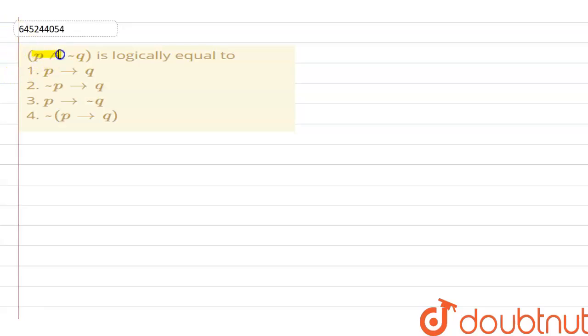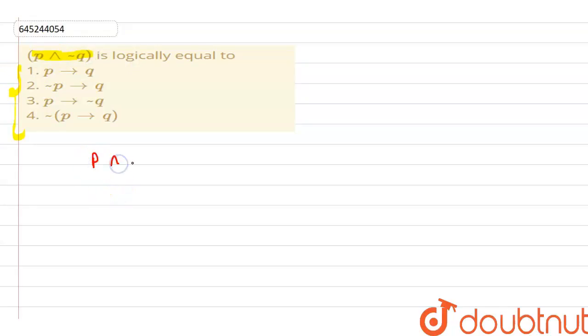In this question, we have given that p conjunction negation of q, and we need to check which of the following options is logically equivalent to this. We have to check for option number one.